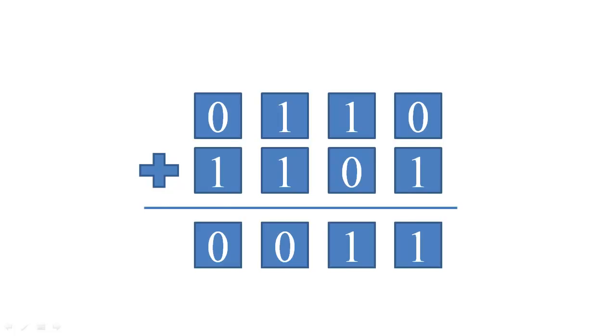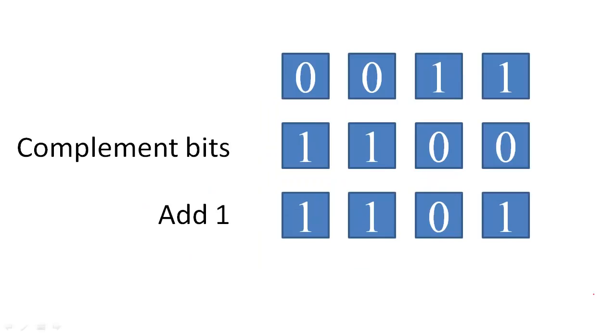I'm glad you asked. Fortunately, 2's complement represented numbers have a convenient algorithm for changing them from positive numbers into negative numbers, and vice versa. Simply, you complement all the bits, change 1's to 0's and 0's to 1's, and then add 1.